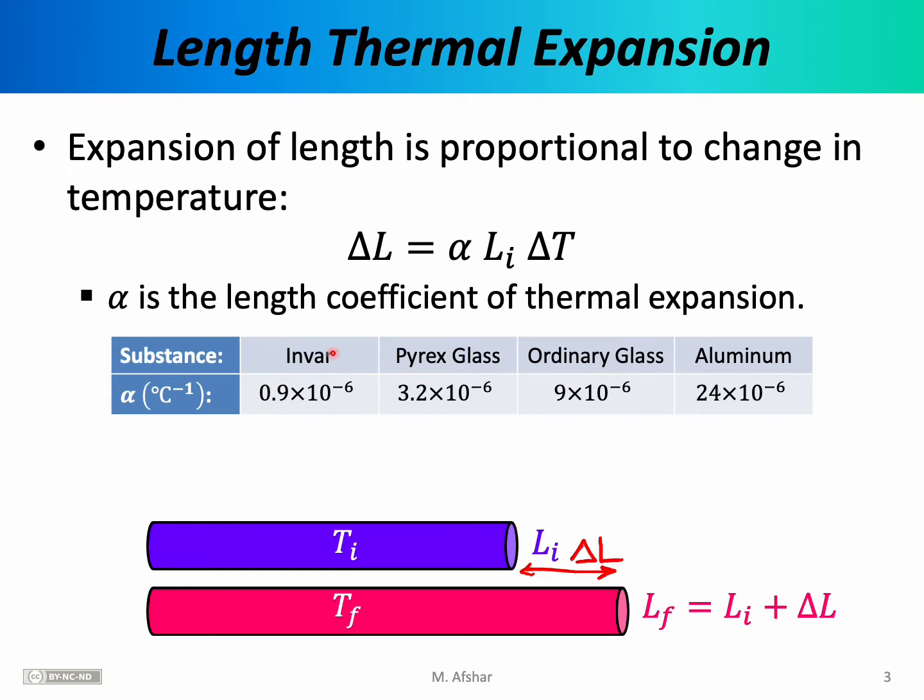Invar, for example, is an alloy of nickel and iron and is famous for having a very small coefficient of thermal expansion. Its alpha is 0.9 times 10 to the minus 6. Pyrex glass has a coefficient of 3.2 times 10 to the minus 6, while ordinary glass has a coefficient that is almost three times as large as Pyrex glass. This difference explains why it is relatively safe to put a Pyrex glass dish inside an oven, but it is somewhat dangerous to heat ordinary glass inside an oven. When you place a dish made of ordinary glass inside an oven and you heat it, the dish expands, and that large expansion creates stresses in the dish that eventually crack the glass.